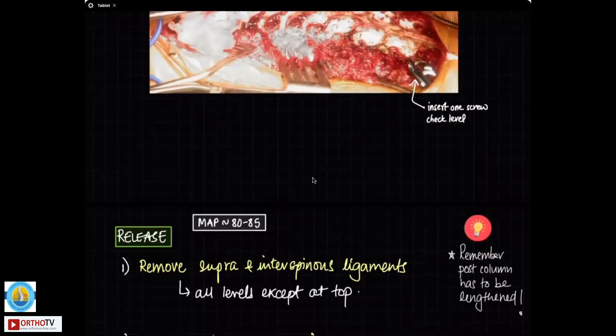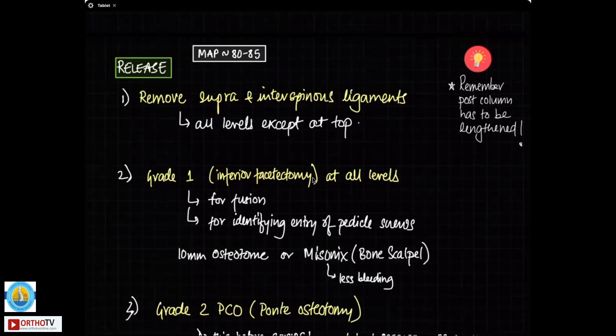Then, coming to the next part of the surgery, the next part of the surgery is basically you want to see what releases that you need to do. By this time, your MAP has to be higher about 80 to 85 millimeters of mercury. Make sure your anesthetist know this beforehand and you have explained to the anesthetist that you want the mean arterial pressures above this threshold during the main part of the surgery.